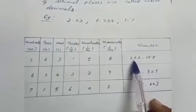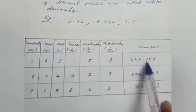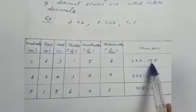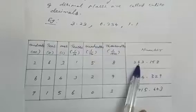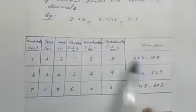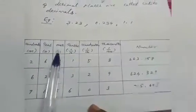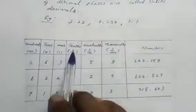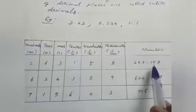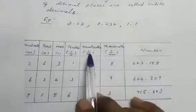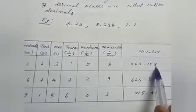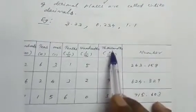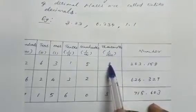Now look at the table showing place values. For the number 263.158: the place value of 2 is 2 hundreds, 6 is 6 tens, 3 is 3 ones, 1 is 1 tenth, 5 is 5 hundredths (5 divided by 100), and 8 is 8 thousandths (8 divided by 1000).